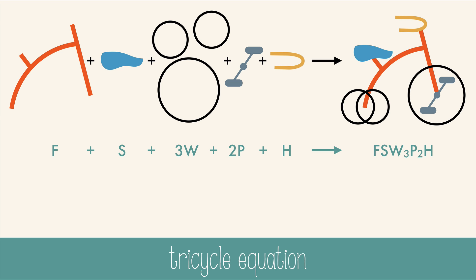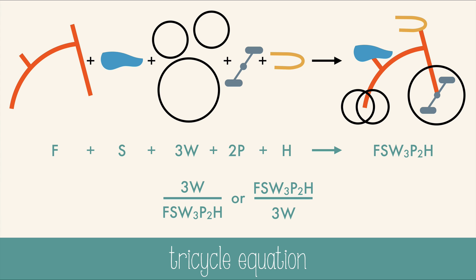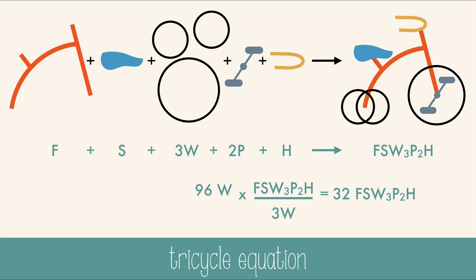For example, we know that if it takes three wheels to make one tricycle we can write this conversion factor in two ways, depending on what we need. So if we have 96 wheels we can do a little dimensional analysis and find that we can make 32 tricycles.